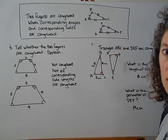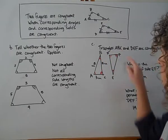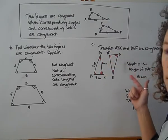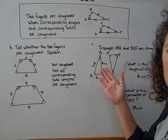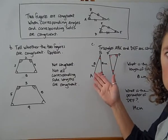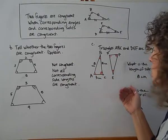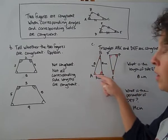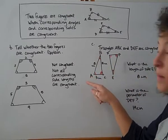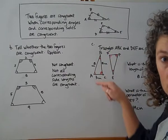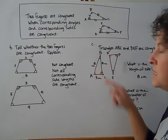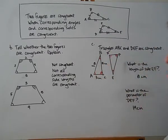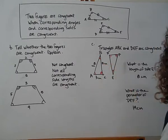What is the perimeter of triangle DEF? Since the two figures are exactly the same, the perimeter of triangle ABC equals the perimeter of triangle DEF. Adding the three sides: 8 plus 8 is 16, plus 3 gives a perimeter of 19 centimeters for triangle DEF.